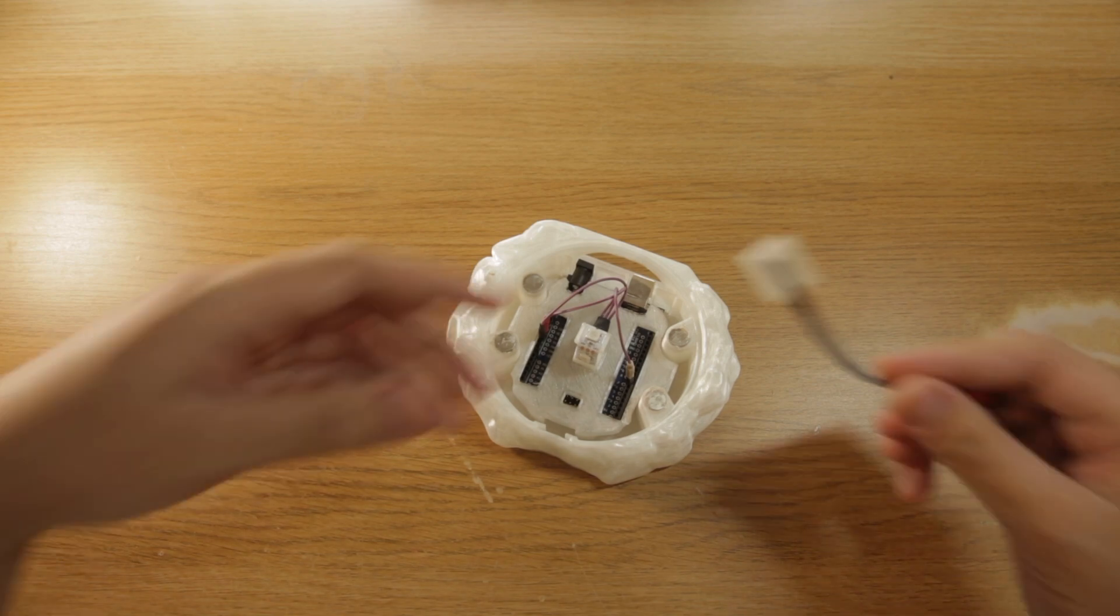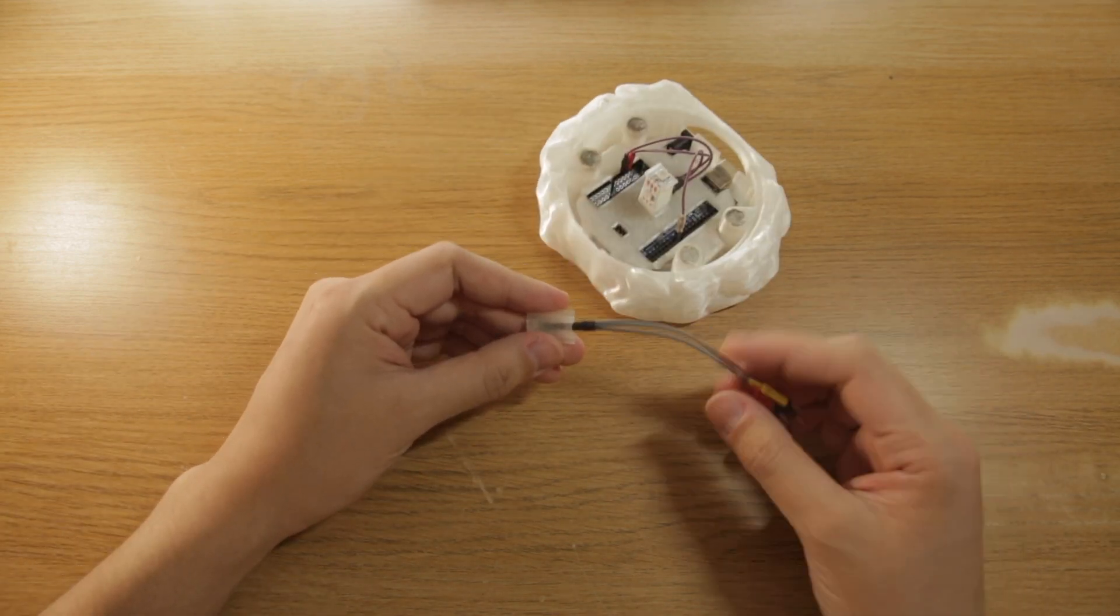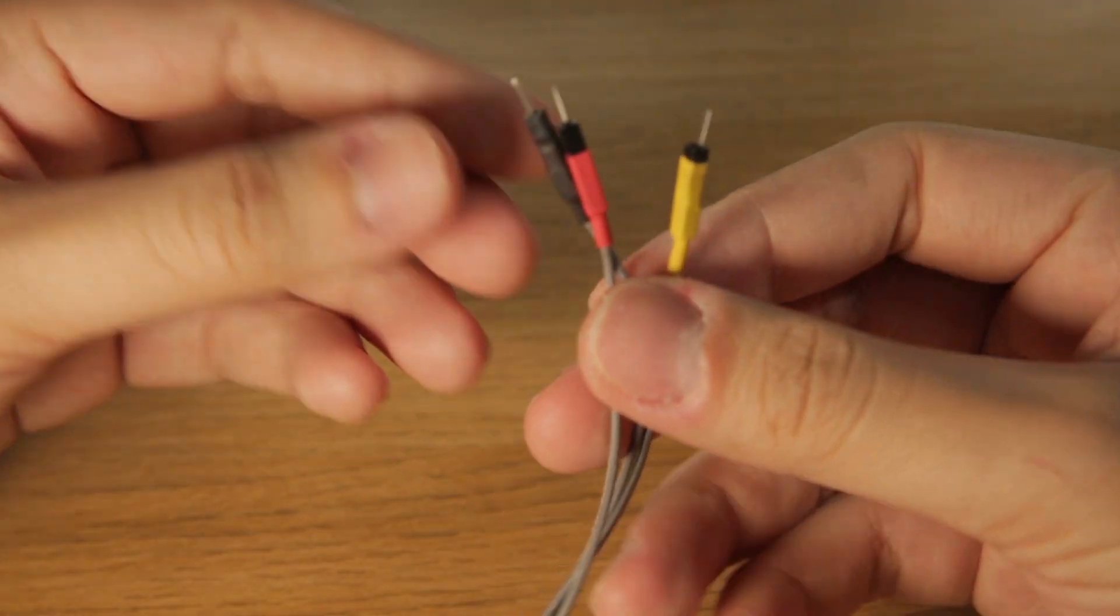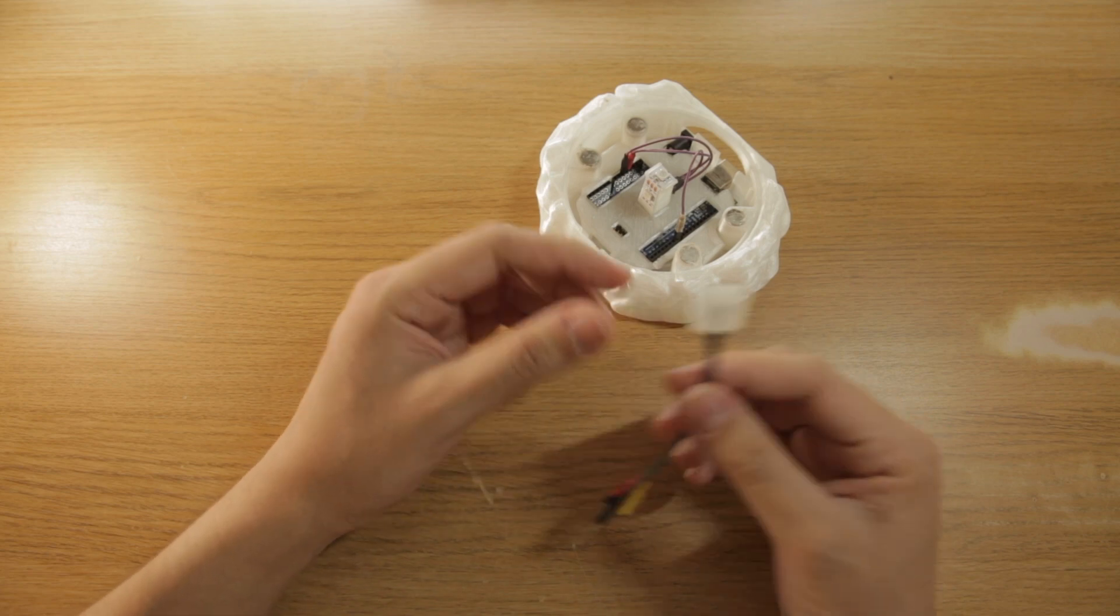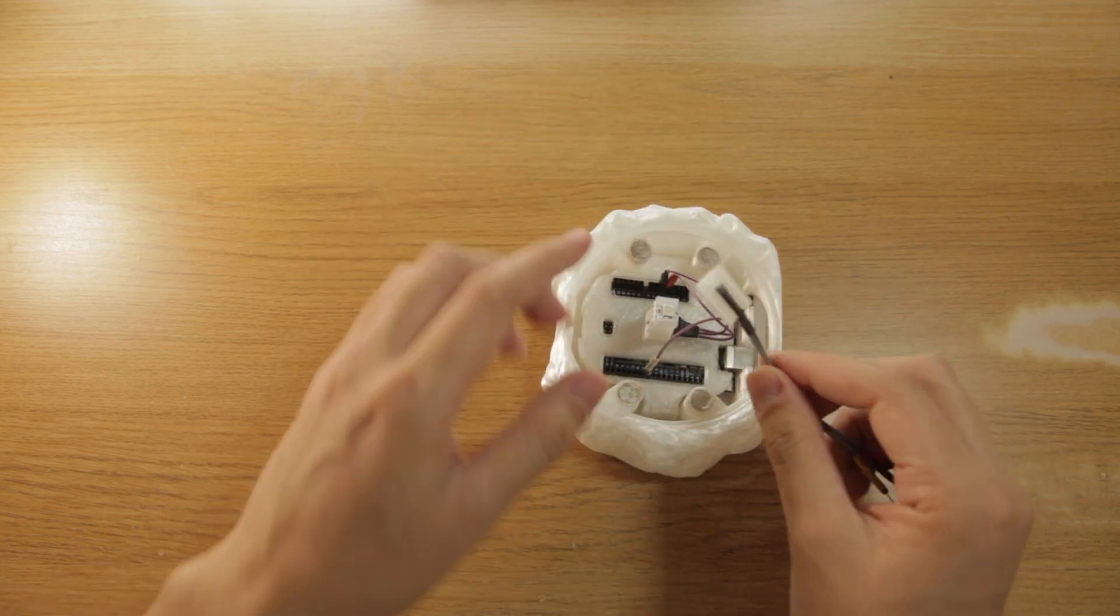The next step is you're going to take your magic wand sensor. Once again, note the colors of the tags at the end of the wires that's coming out of it.